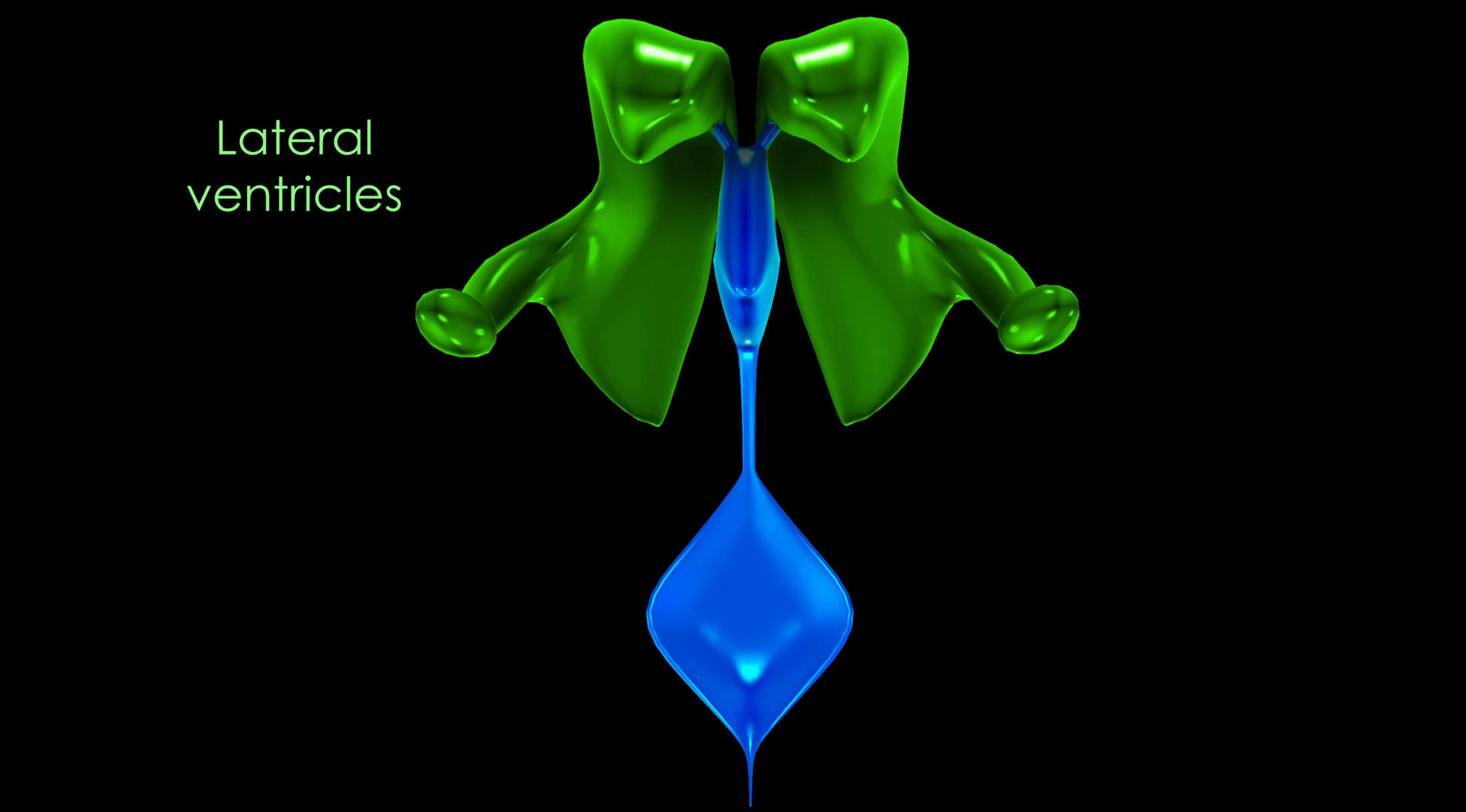The two lateral ventricles occupy the center of the cerebral hemispheres. Both are connected to the third ventricle at the center of the diencephalon by the foramina of Monroe.